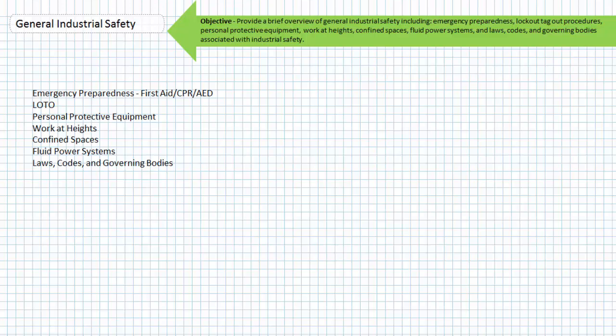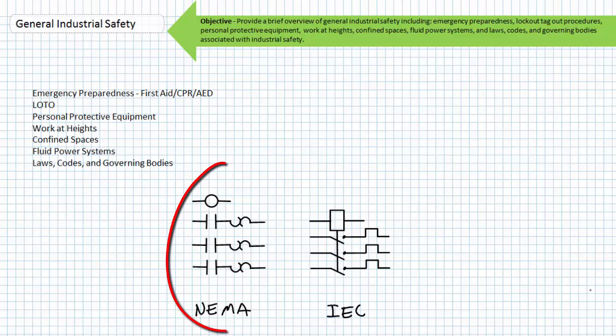Finally there exists two almost parallel organizations that define and recommend safety, mechanical, and electrical standards for motors and other electrical equipment. In North America the National Electrical Manufacturers Association known by its initials NEMA takes this role and the International Electro-Technical Commission sometimes known as IEC covers the rest.